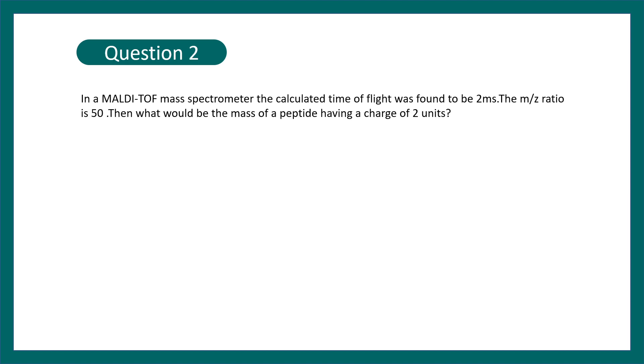Question number two. In a MALDI-TOF mass spectrometer, the calculated time of flight was found to be 2 milliseconds. The m by z ratio or mass by charge ratio is 50. What would be the mass of the peptide having a charge of two units total? It's a tricky question. So the information about time of flight is totally irrelevant here. m by z ratio is 50, z or the charge is 2. So obviously mass would be 100 units. It's very easy.